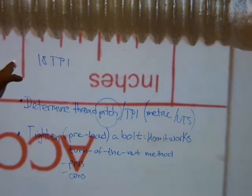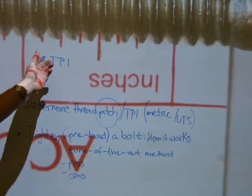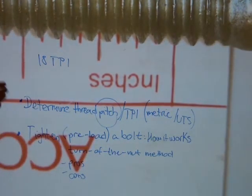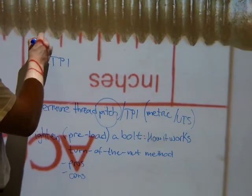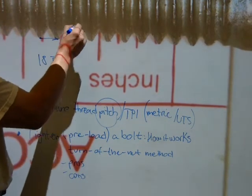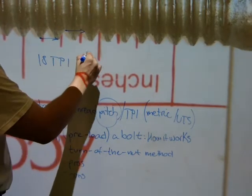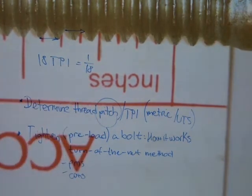18 TPI is typically how threads are specified. So if you counted the number of turns over an inch on this one, you would come up with a number, say 8 TPI or whatever it is on the big anchor ball. On this one, it is 18 TPI. And that also means that the pitch from one crest to another crest or from one root to another root, same thing, is exactly 1/18th of an inch. It's a fraction.